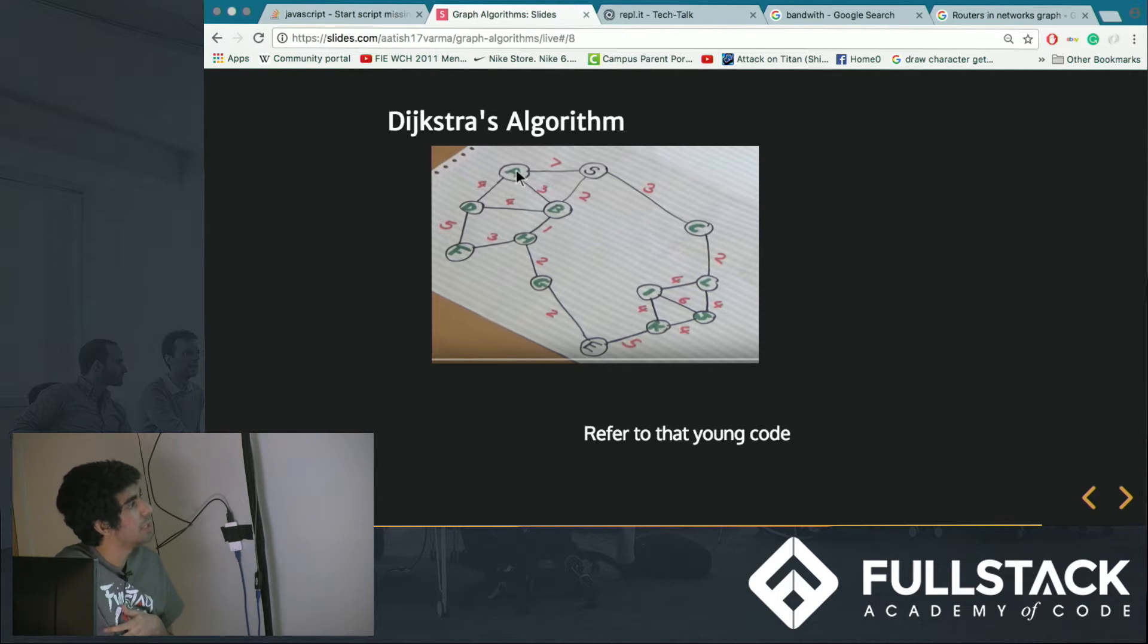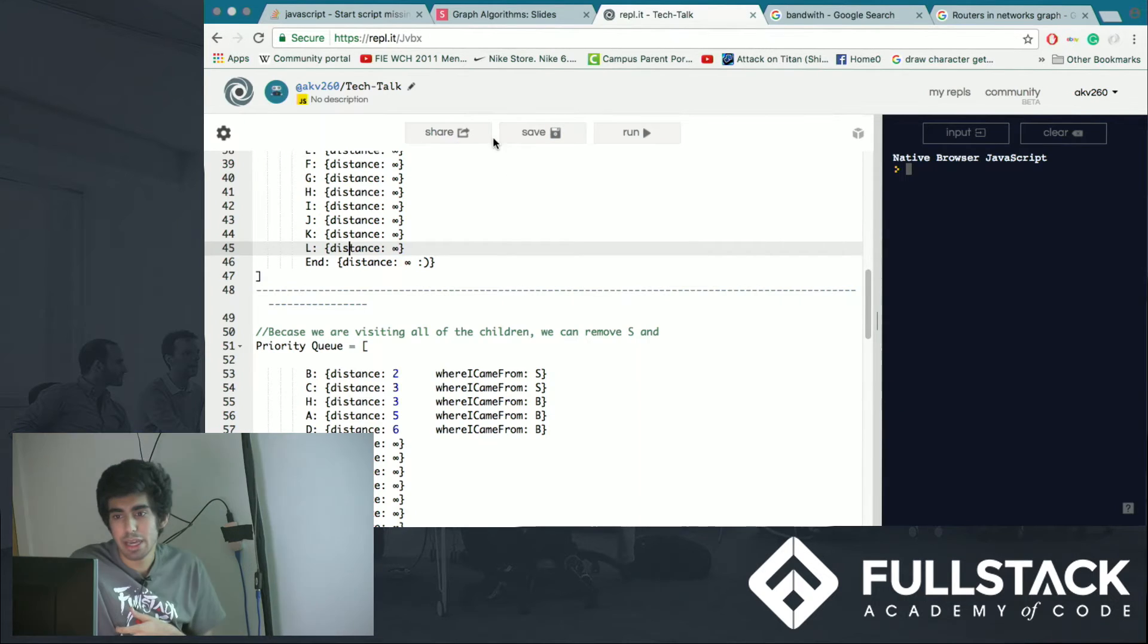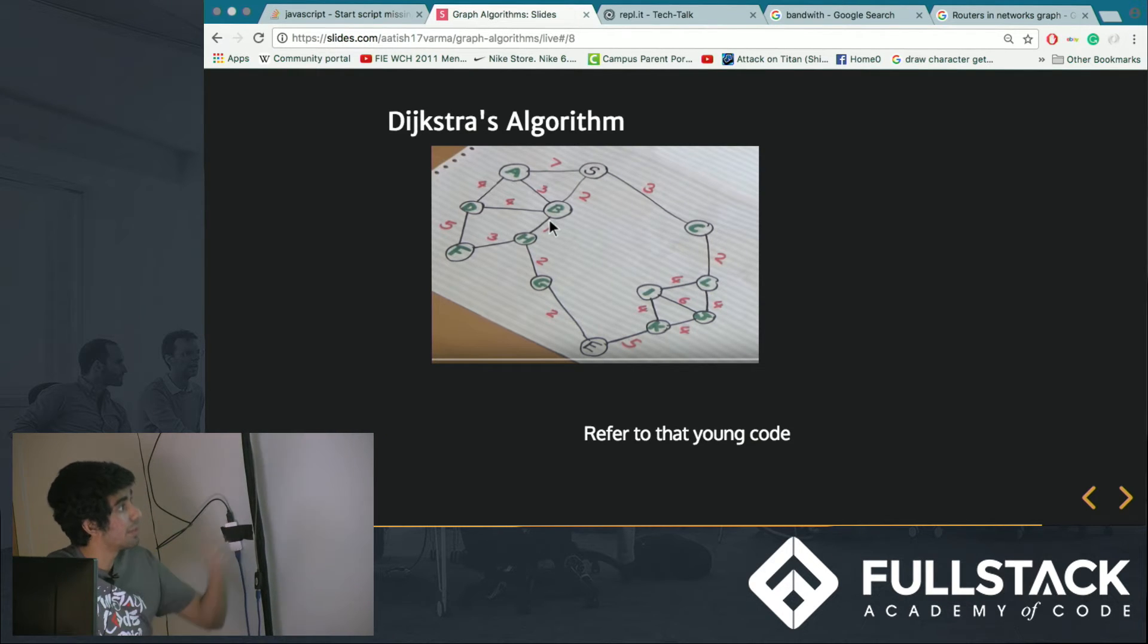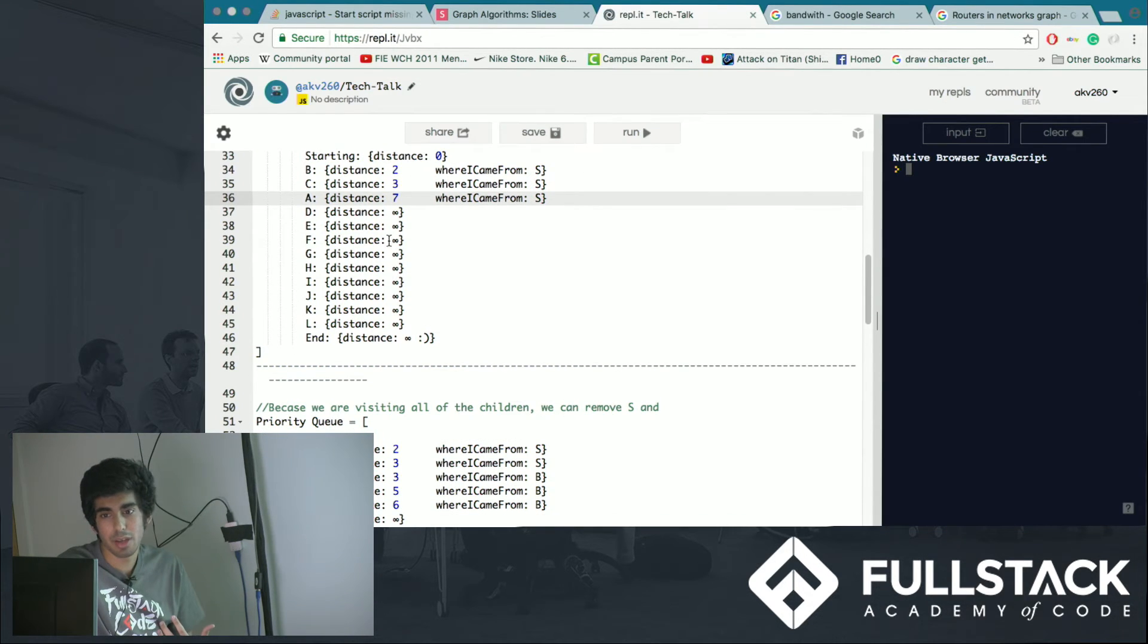And A is very interesting because A is a sibling of B, or A is connected to B and it's connected to S. And currently we had set the distance of 7 for A. But when evaluating it from coming to B and then going to A, you can see it's 3 plus 2, 5. And 5 is shorter than 7 so we want to replace this value of 7 with 5.